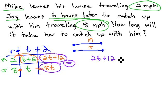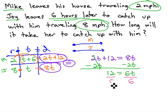2t plus 12 is equal to 8t. This equation we know how to solve by moving the variables all to one side by subtracting 2t, giving us 12 equals 6t, and finally dividing both sides by 6 to give us t equals 2.